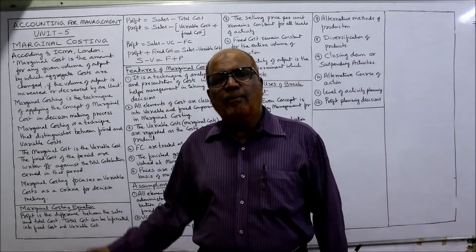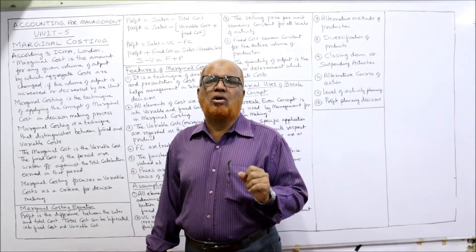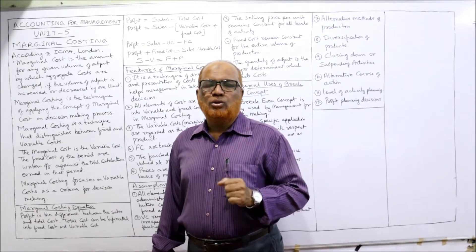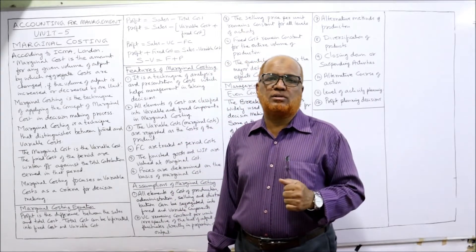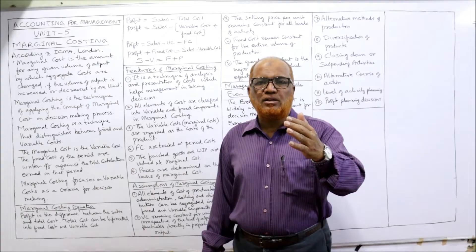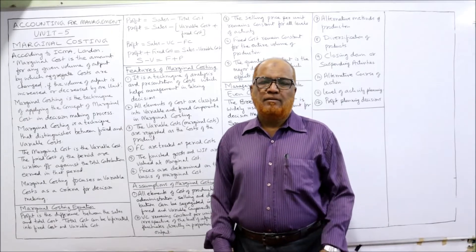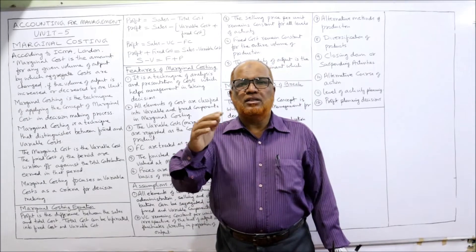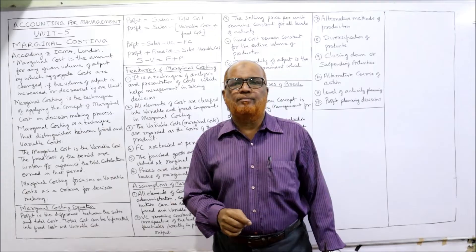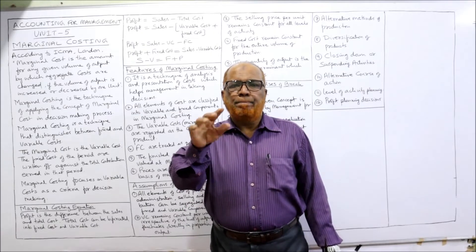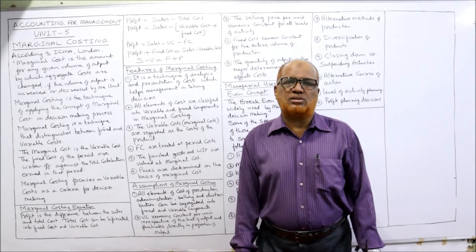First of all, marginal costing is the technique of using marginal cost in decision making. Before learning what marginal costing is, you must know what marginal cost means. Marginal cost is the increase or decrease in cost when the output is changed by one unit. When one unit of output is increased, there will be an increase in total cost, and that increase in total cost is called marginal cost.